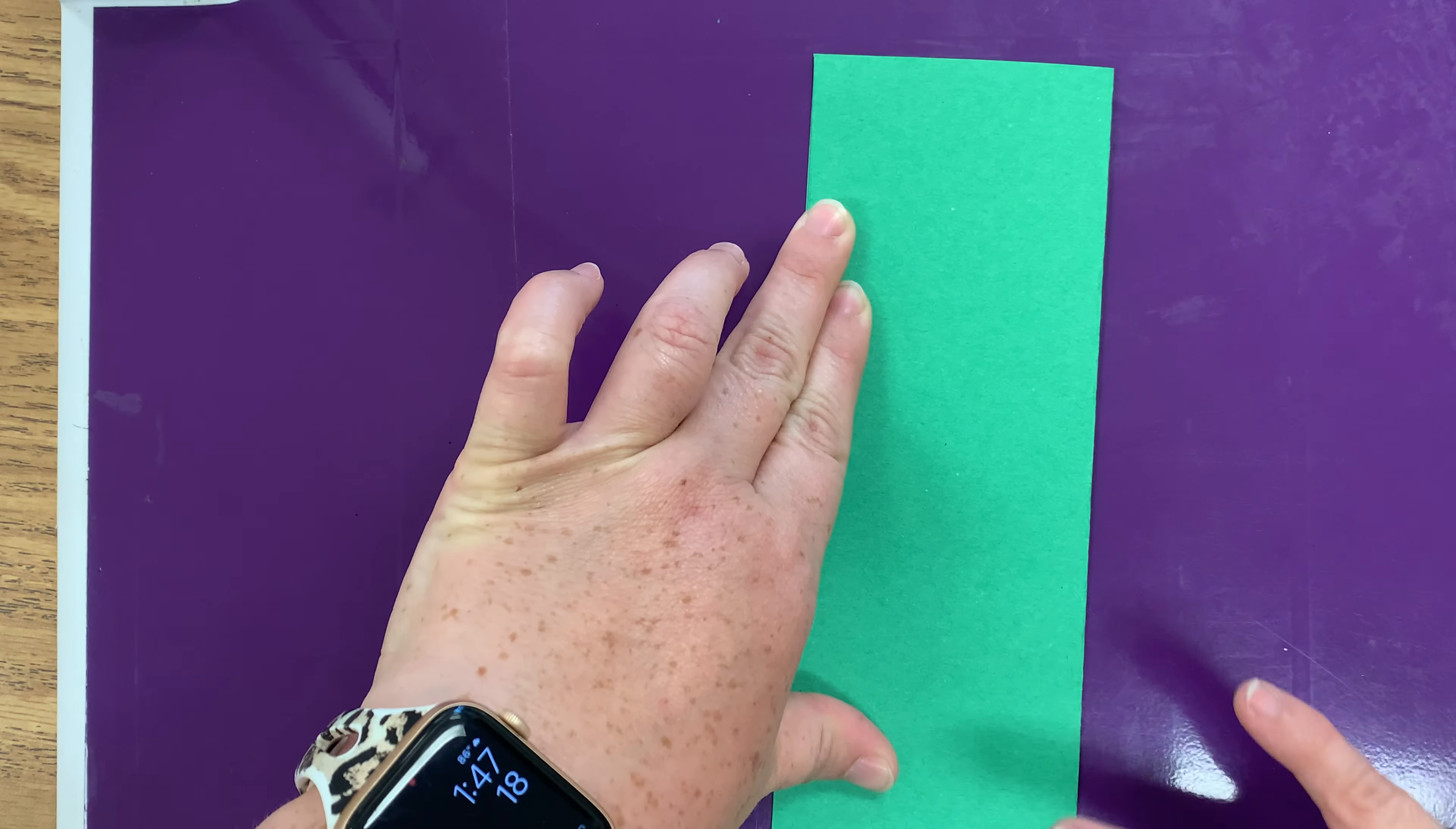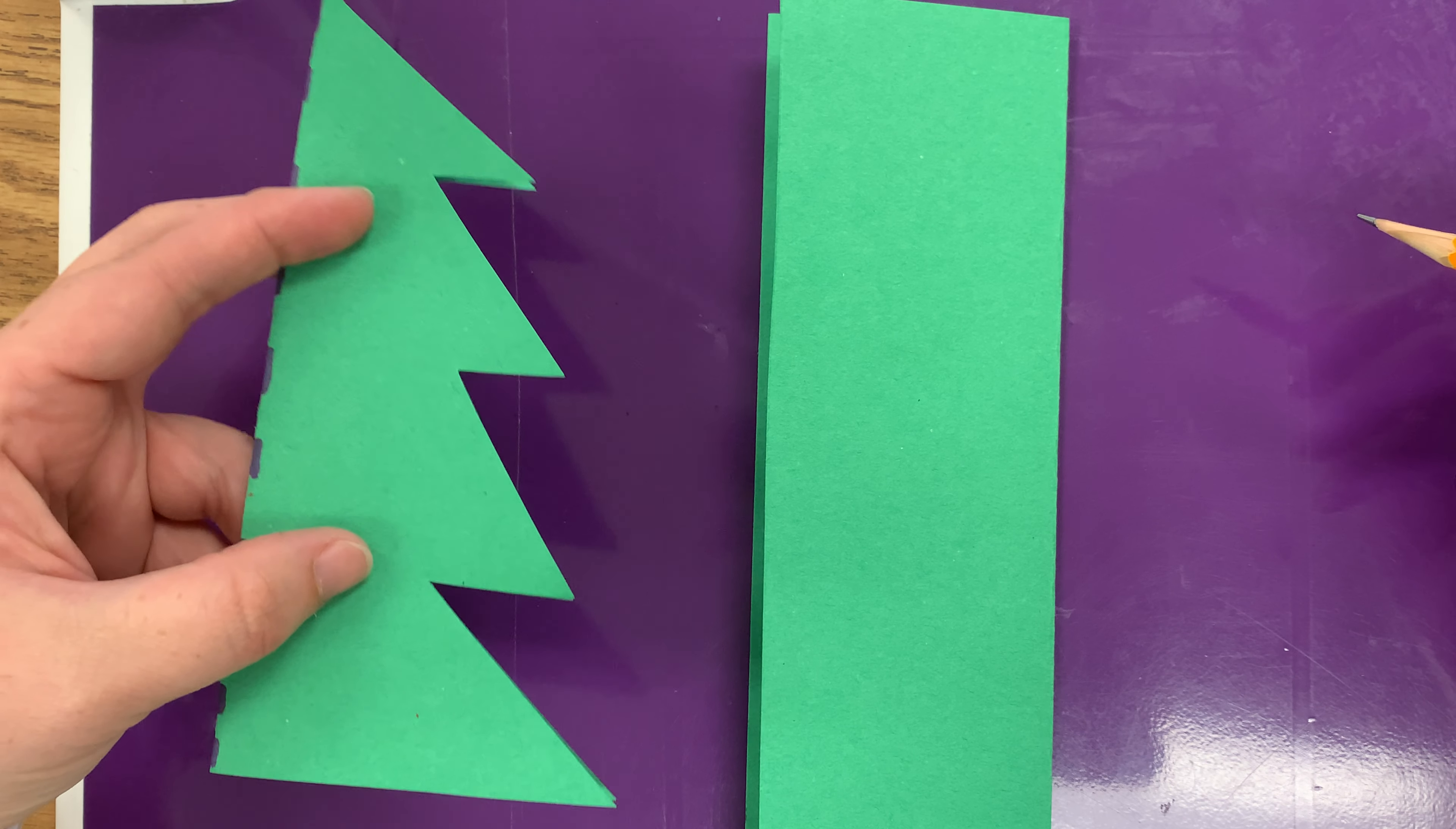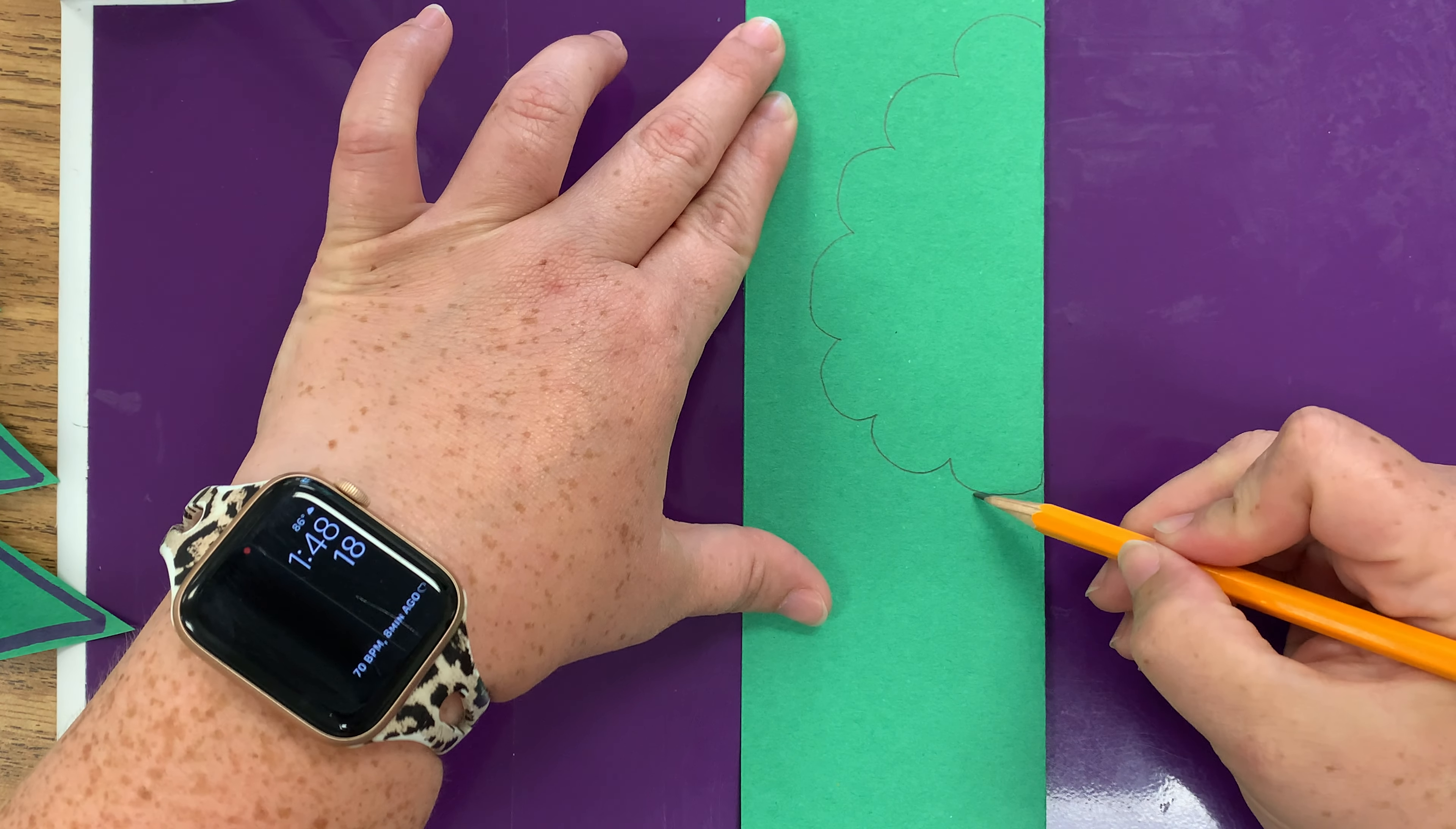Okay, now take your pencil and you're gonna draw half of your tree. Your tree could be a pointy tree like this or it could be a bubbly tree. This time I'm gonna draw a bubbly tree. So the top of the tree has all the leaves and the bottom of your tree is your trunk.